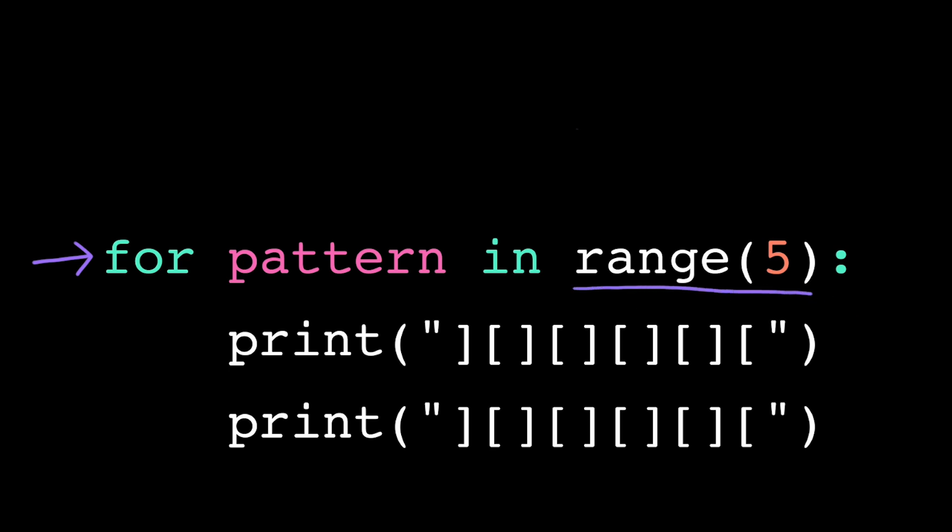There is some nuance here to exactly how range works behind the scenes, but these are just details to optimize for efficiency. For our purposes, we should just think of range as generating a range of values between a start and a stop. By default, the computer uses 0 as the start value. The stop value is the number passed into range.